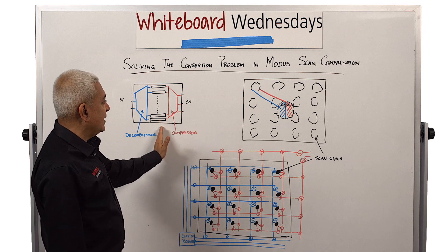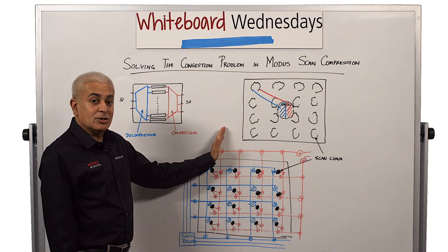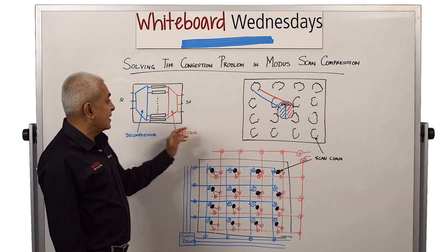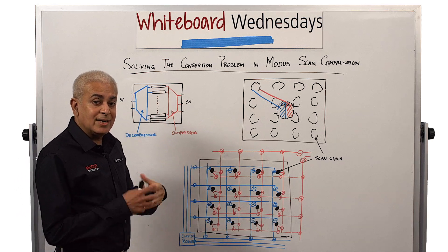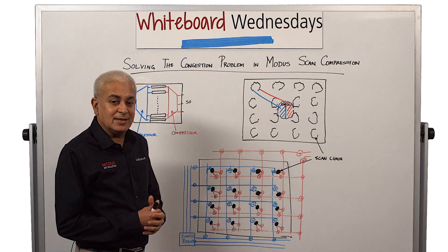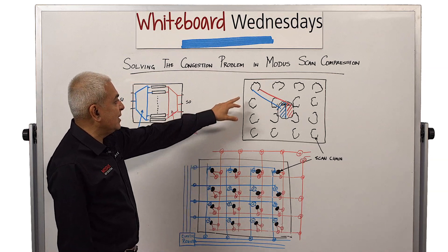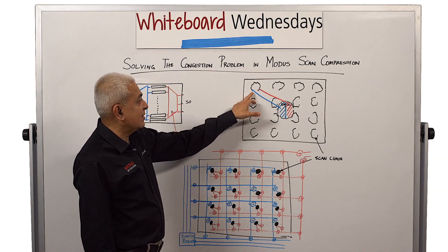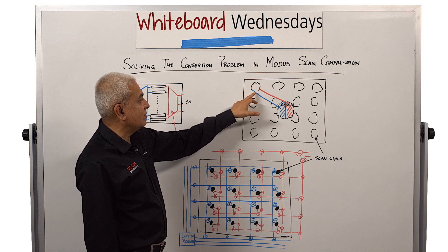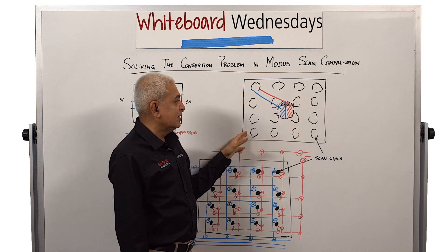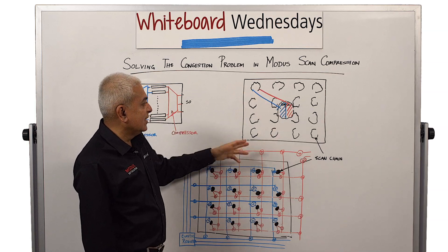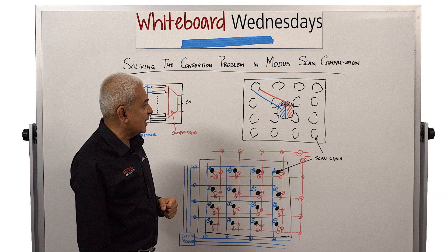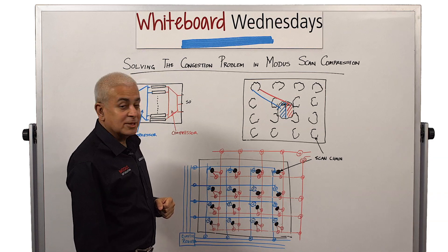If you really look at the way normal compression solutions are implemented, scan chains in the design are implemented based on locality of the flip-flops in the netlist. Hence you end up getting scan chains that are locally created across the particular layout of the design. What you see here in black are the scan chains, and I just drew a grid of those scan chains in this particular picture.